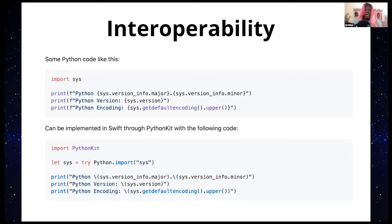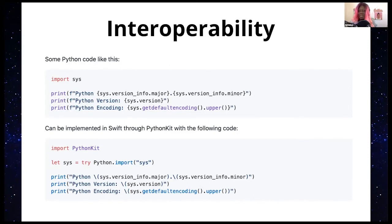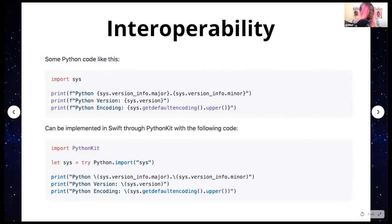Interoperability was a real game changer for the Swift programming language. You can simply import any Python library in Swift and it just works — it compiles. Similarly, you can import C and C++ libraries into Swift as well. If you need specific functionality that's not implemented in Swift, you can import the corresponding Python, C++, or C package, and you can call Python functions and convert values between Swift and Python, or Swift and C++.